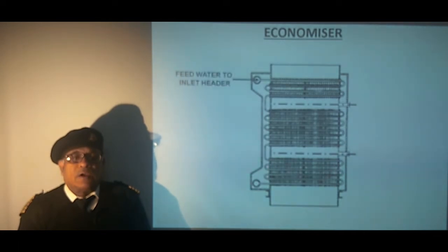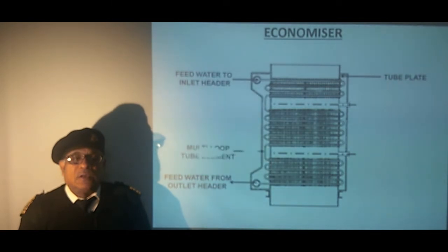We have the feed water inlet header. Here we have feed water from outlet header. This is the tube plate to which these coils are attached. We have the multiple loop tube elements. We have the expansion ring which facilitates the expansion of the multi loop tube element. The anchor collar. The anchor collar is on the other side of the tube plate which holds the multi loop tube element in place.